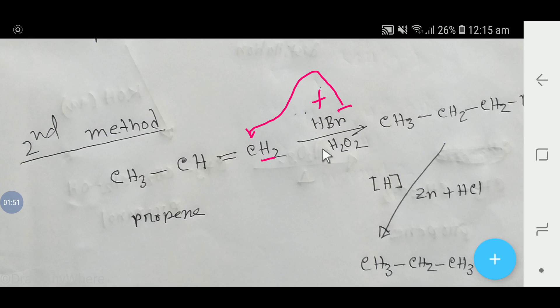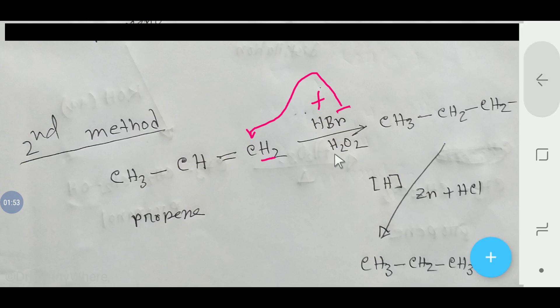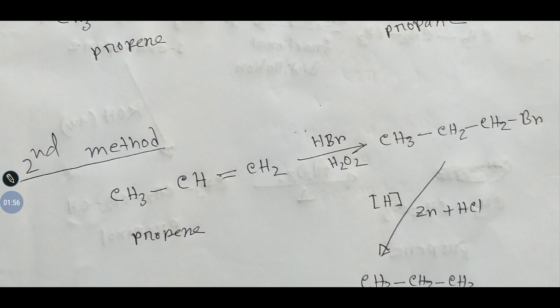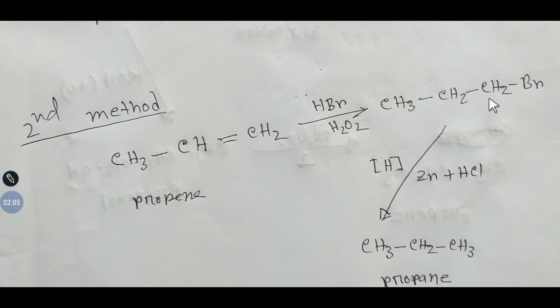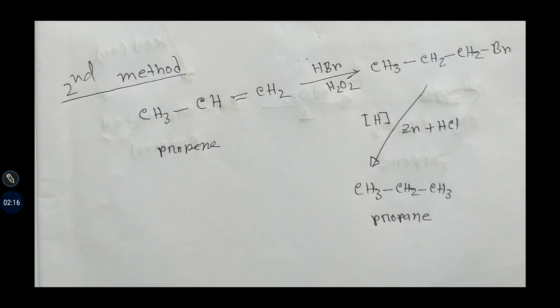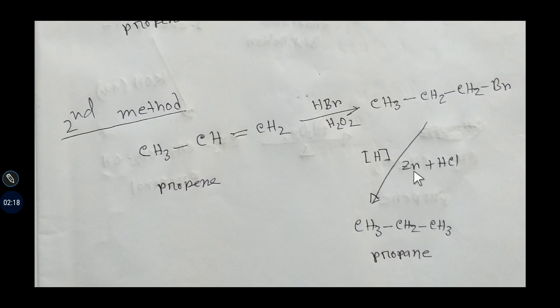So we are getting this compound and the name of this compound is 1-bromopropane. And if you reduce this 1-bromopropane by zinc and HCl, then this bromide will be replaced by hydrogen and you will get propane. So try to practice this equation. I hope it will be helpful for you.